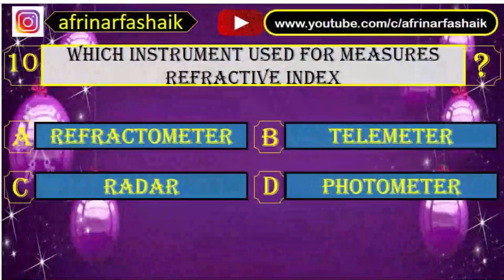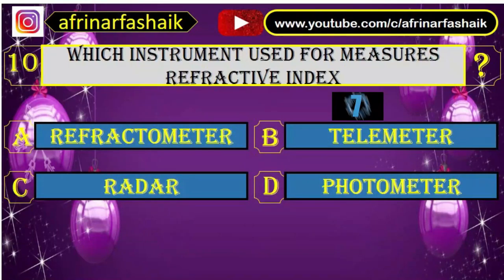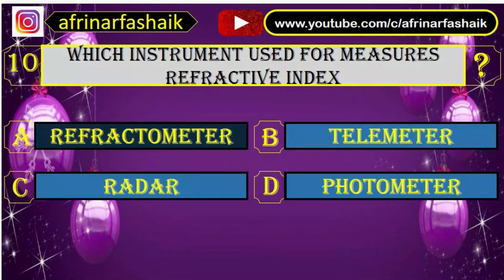Question number ten: which instrument is used to measure refractive index? Your options are A. Refractometer, B. Telemeter, C. Radar, D. Photometer. A. Refractometer is the right answer.